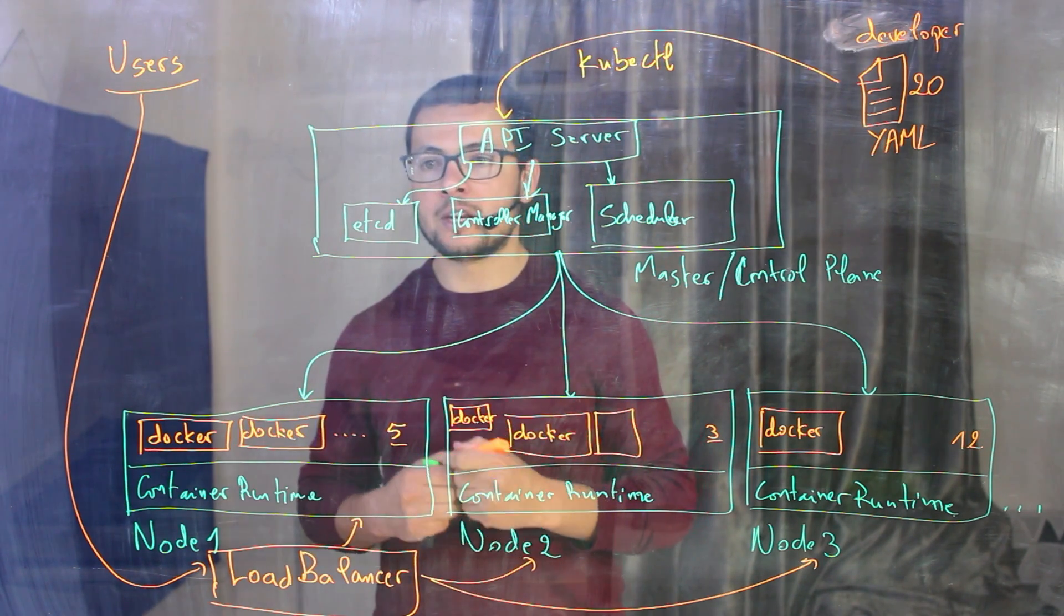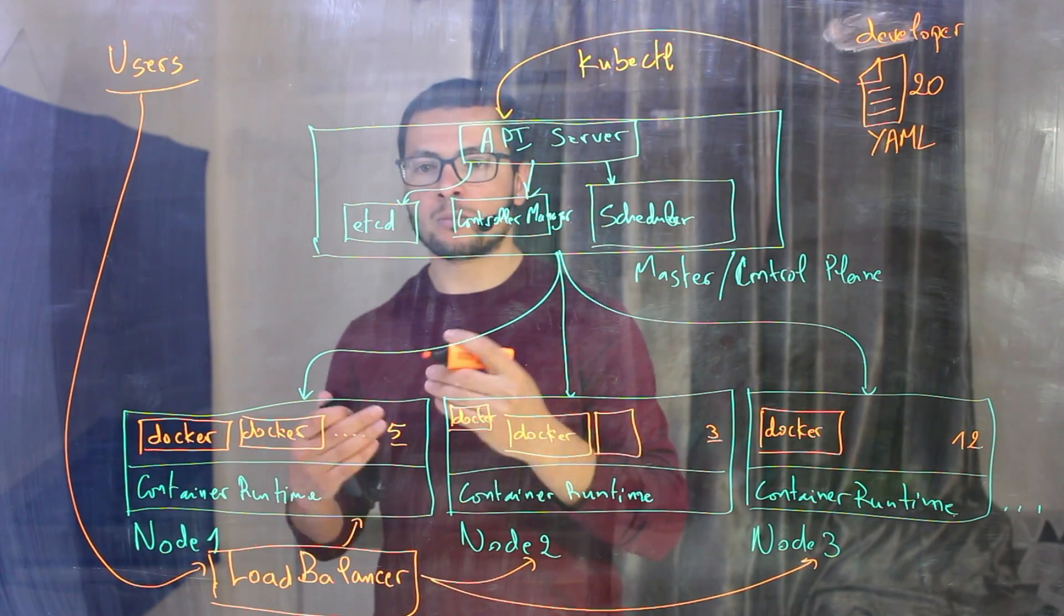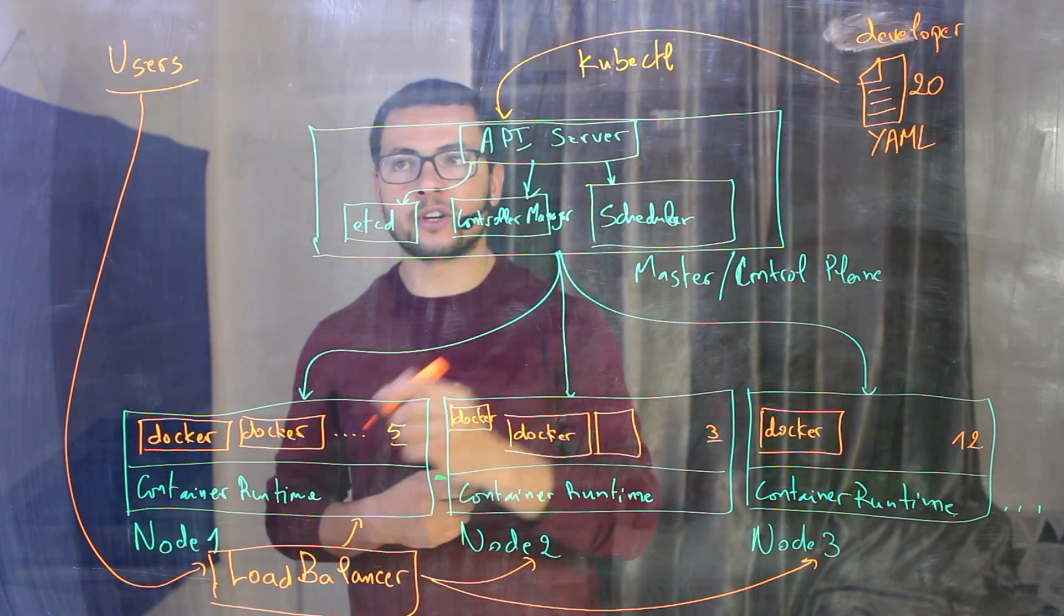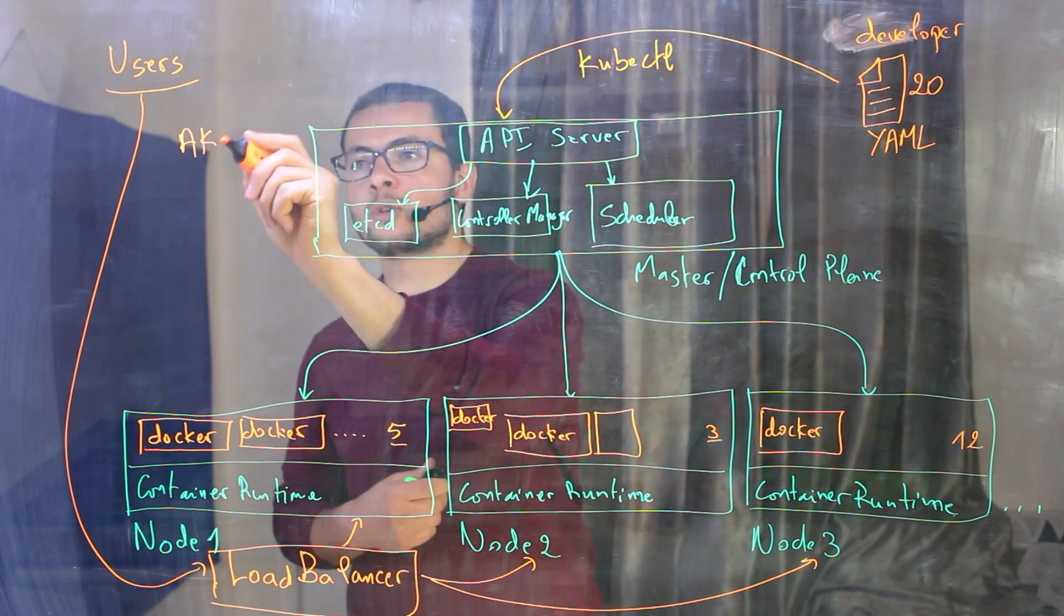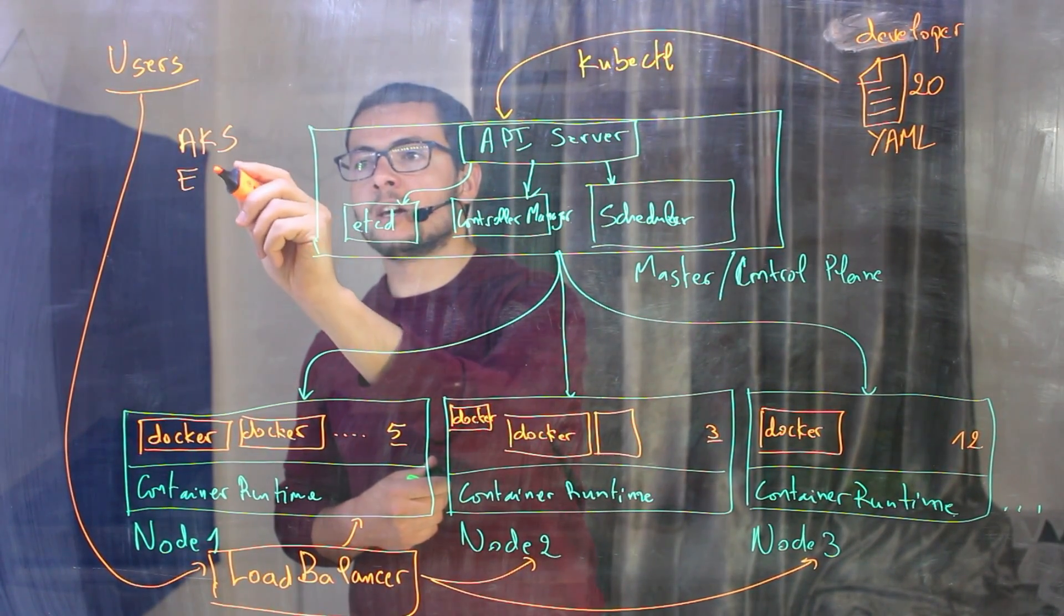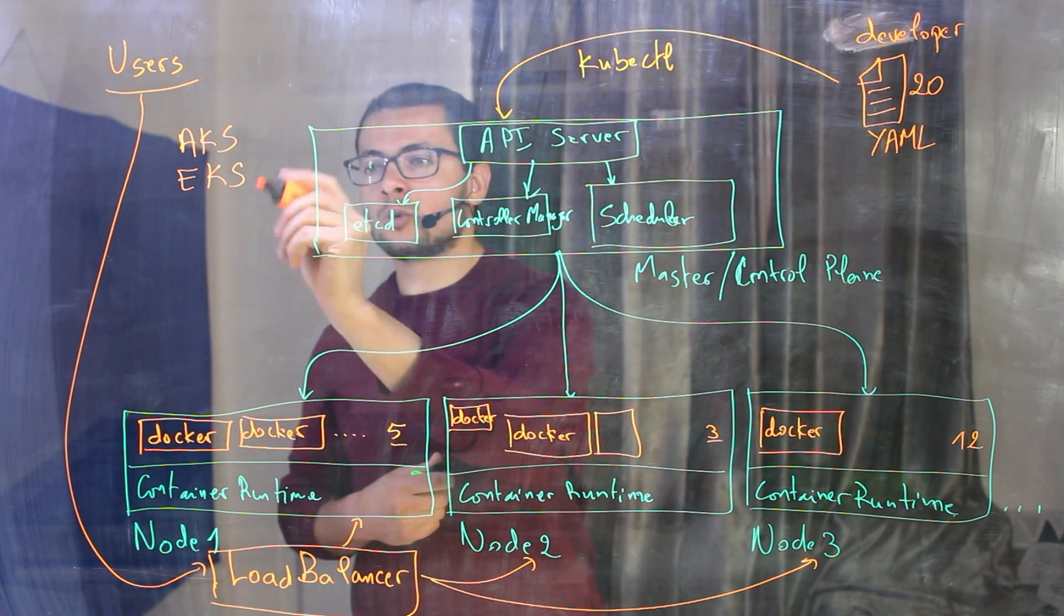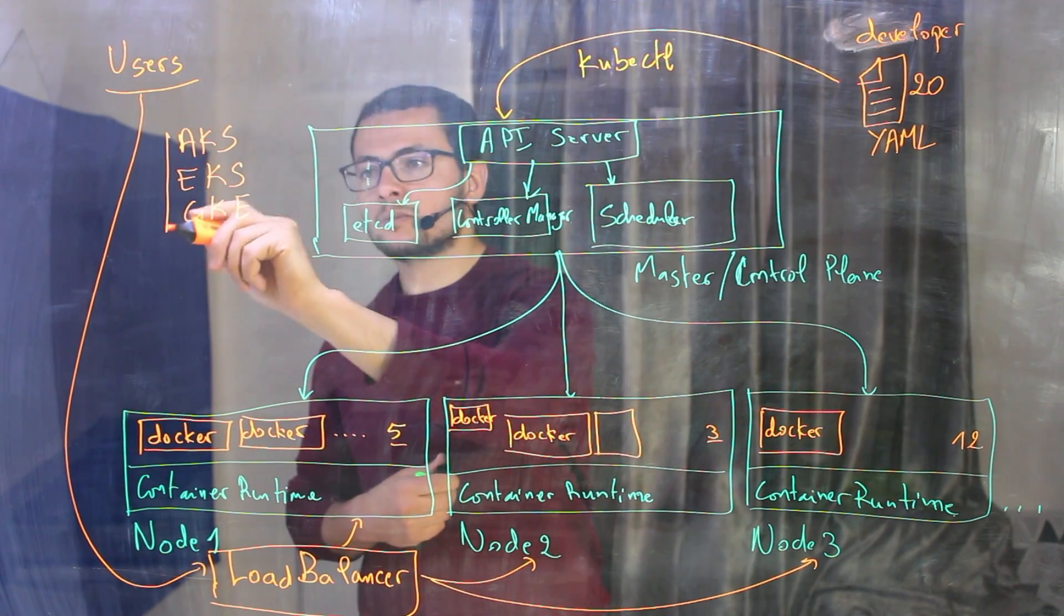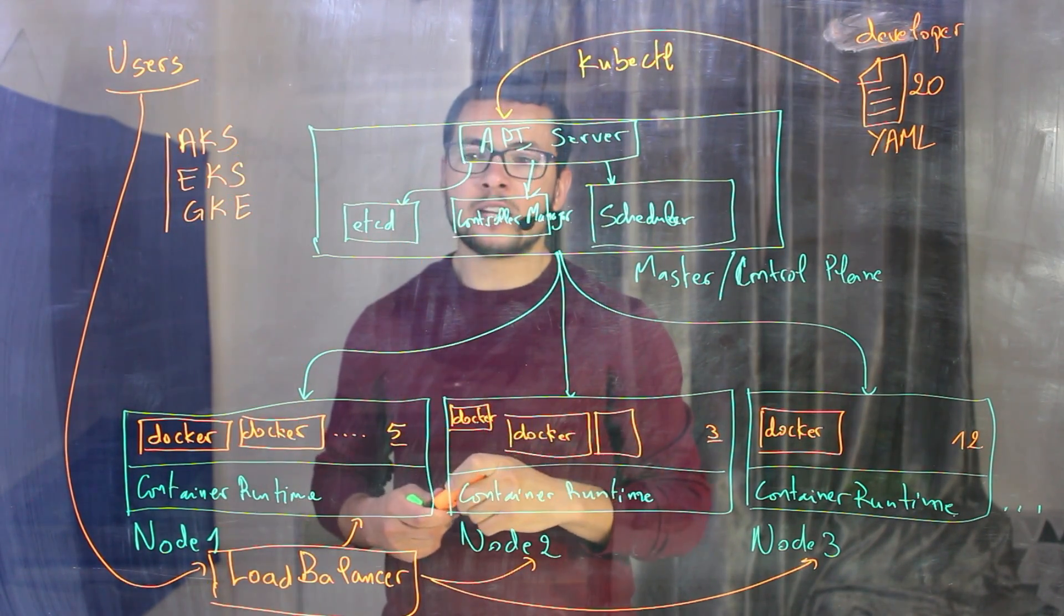And we have here the three main cloud providers, Azure, Google and Amazon. They have different offers for managed Kubernetes cluster. So for Azure, for example, they have a thing called AKS, Azure Kubernetes Service. For Amazon, they have Elastic Kubernetes Service. And for Google, they have Google Kubernetes Engine. And all of those three, they offer those managed services.